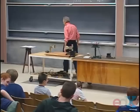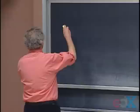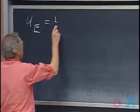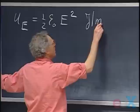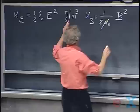Today I'm going to talk about energy in electromagnetic waves. There must be energy in there because electric fields contain energy and magnetic fields contain energy. The electric field energy density is one-half ε₀E², in joules per cubic meter. The magnetic field energy density, which also came up earlier in the course, is one over two μ₀ times B², again in joules per cubic meter.